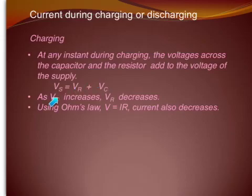And as Vc increases, then Vr must decrease because they add up to this fixed value, Vs. And using Ohm's law, V equals IR, current must also decrease as Vr, which is the voltage across the resistor, decreases.